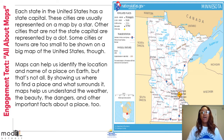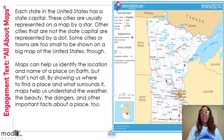Maps can help us identify the location and name of a place on earth, but that's not all. By showing us where to find a place and what surrounds it, maps help us understand the weather, the beauty, the dangers, and other important facts about a place, too.